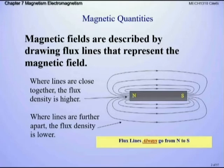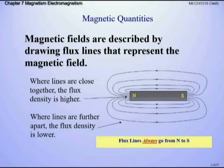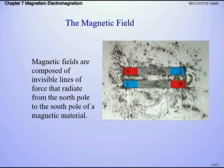Flux lines come into play when we talk about the earth and the magnetic north pole. Flux lines always go from north to south. Think about why opposites attract and why likes repel in magnetic fields — north doesn't want to go to north; north wants to go to south — so we have a nice field that goes around whatever magnet we're talking about, or whether it's around the earth.